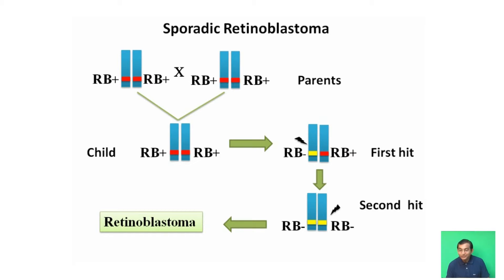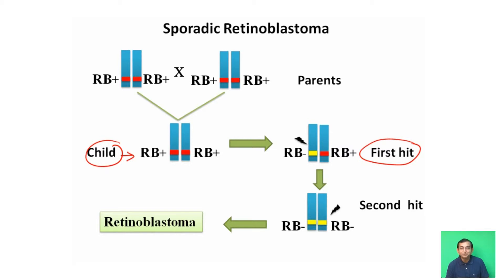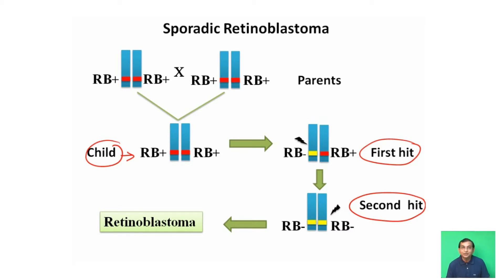In sporadic retinoblastoma, both parents are homozygous normal — both alleles are RB+. The child also initially has both RB+ alleles. If one mutation occurs, that is the first hit, making one allele RB–. In the second hit, the second RB allele is also mutated, and only then does retinoblastoma develop. In this case, the mutation is a deletion mutation.